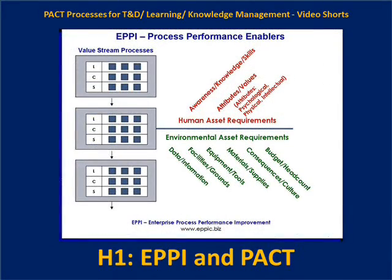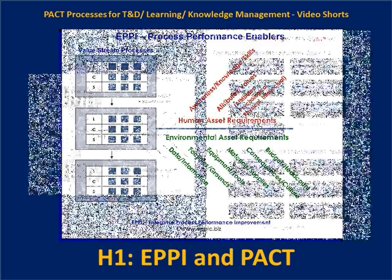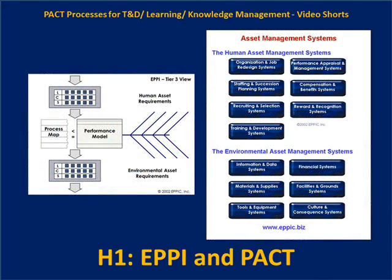For every individual process or groupings of processes, we can accumulate what those human asset requirements are and what those environmental assets are. When we find a deficiency in the human assets or in the environmental assets, we can begin to look at those human asset management systems that provide and assist the development of the humans to make them capable enough to meet the needs of the process. We can look at the environmental asset management systems to determine if there are deficiencies in the environment. Upstream, these systems supply the assets required of the process — if they're deficient, we need to go upstream and look at those.